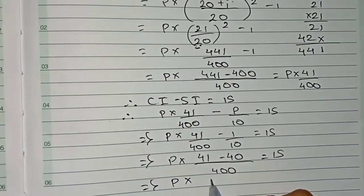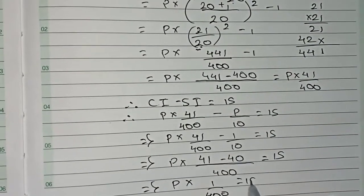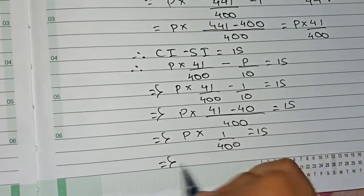Now finally this 400 will go for multiplication here.